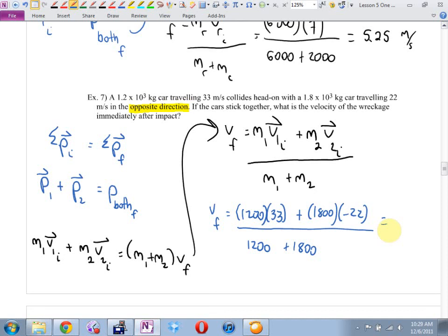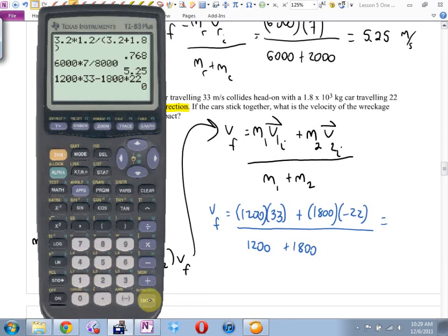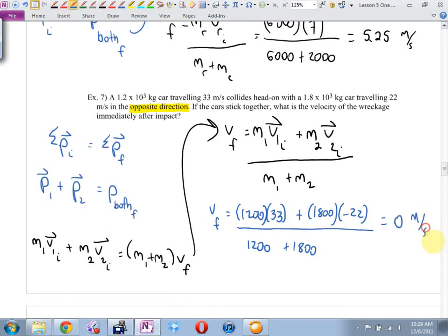Oh. What'd you get, Brett? Zero? Zero? Exactly zero? Really? What does that mean? What does that tell us? First of all, what was the initial momentum of everything then, before the collision? What was my initial momentum? Zero.